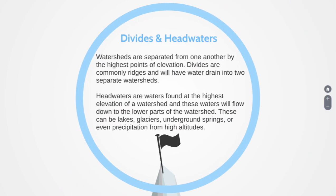At the very tip top of the watershed, we have divides and headwaters. Watersheds are separated from one another by the highest points of elevation. We call these high points a divide. Divides are commonly the ridges that will have the water drain into two separate watersheds.